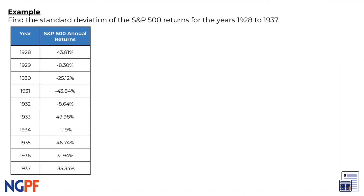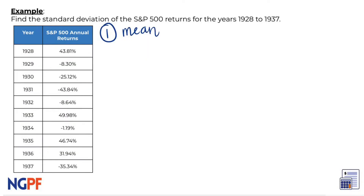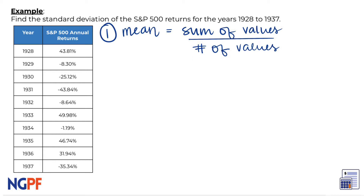Let's try this example. We are provided with annual returns of stocks in the S&P 500 for these 10 years, 1928 to 1937, and are asked to find the standard deviation of the data. The first thing we can do is calculate the mean of the data. We can find the mean average by adding up all of the data points, then dividing by the number of data points we have.